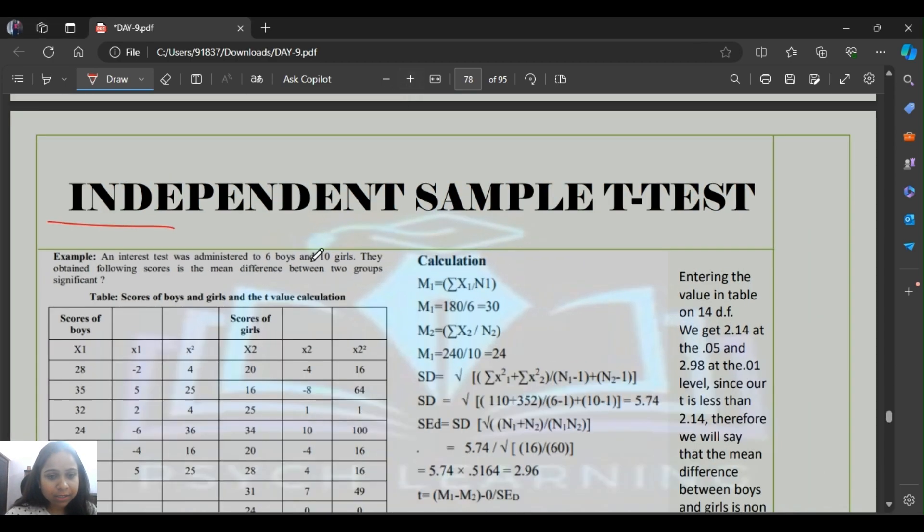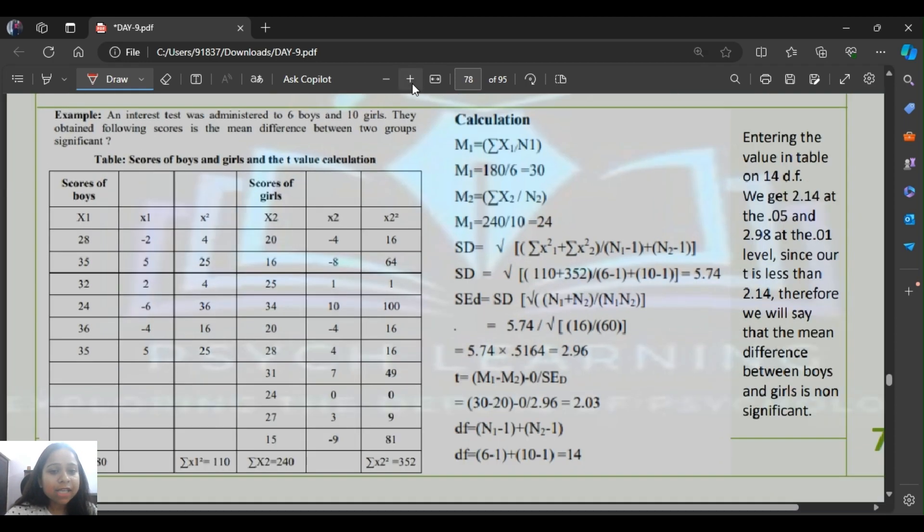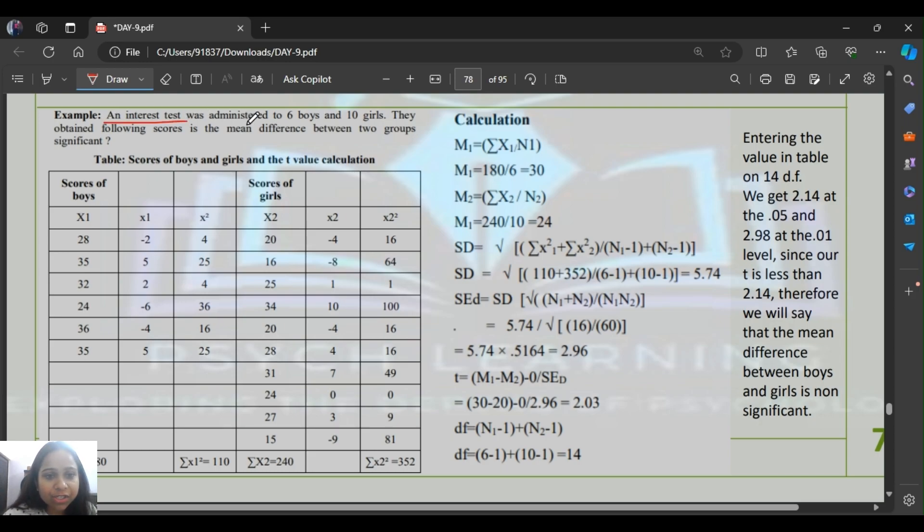Let's do the numerical. An interest test was administered to six boys and ten girls. You can see the boys' scores and girls' scores here. What we've done is written x1 and x2. We found the mean, then subtracted and squared the values, same as we did in regression.